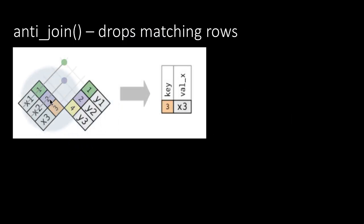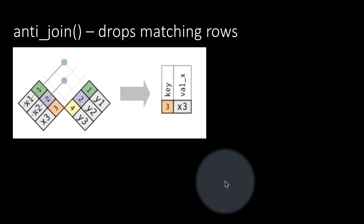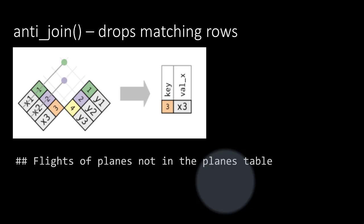In an anti-join, rows that have a match are dropped, so only the row that does not have a match is retained. For example, suppose we want to ask: in the planes table, are there any planes that have not made any flights? Or alternatively, in the flights table, are there any planes which are not even listed in the planes table? So: flights anti-join planes by tailnum equals tailnum, then count tailnum.